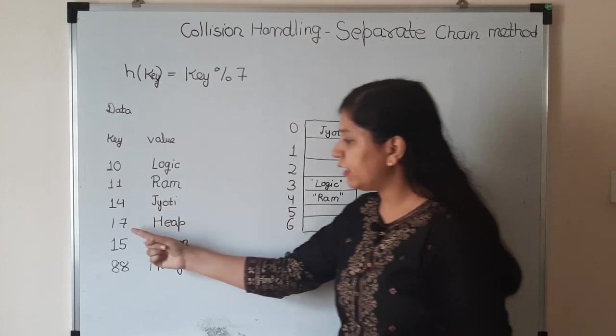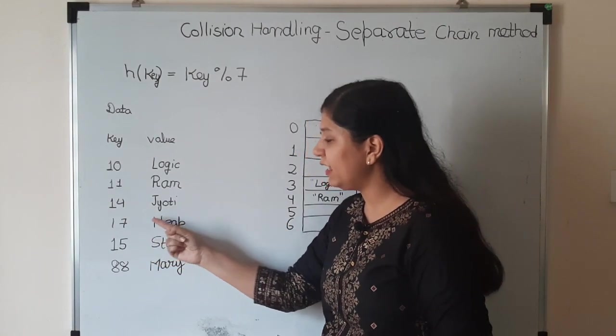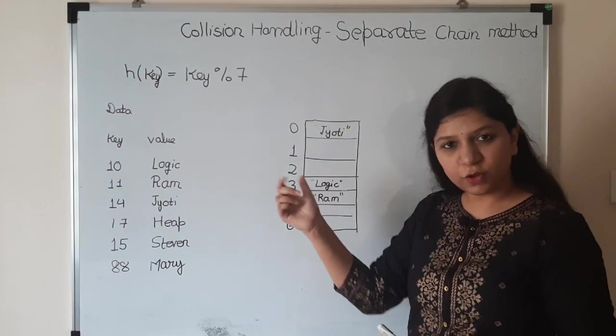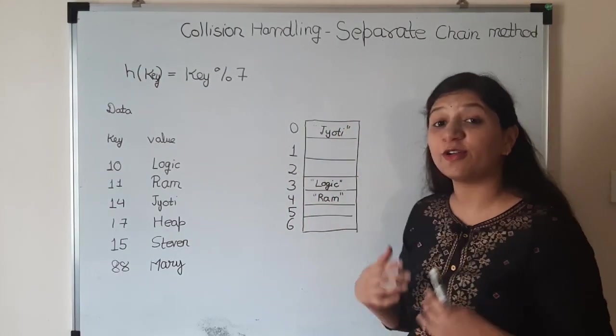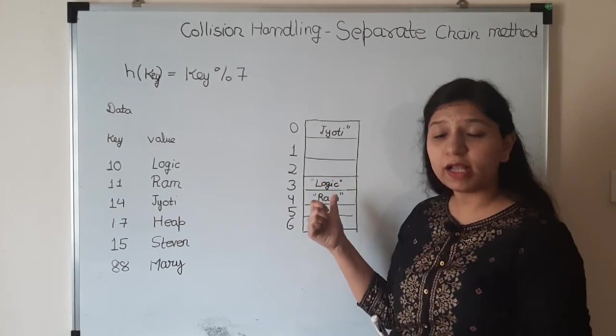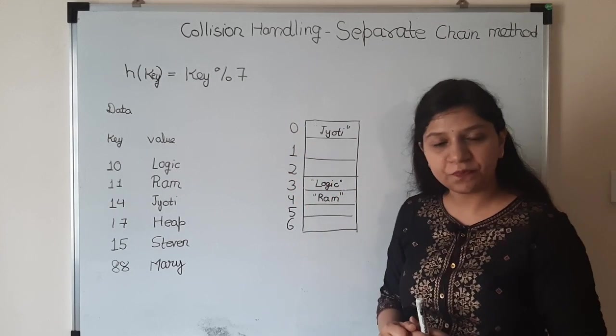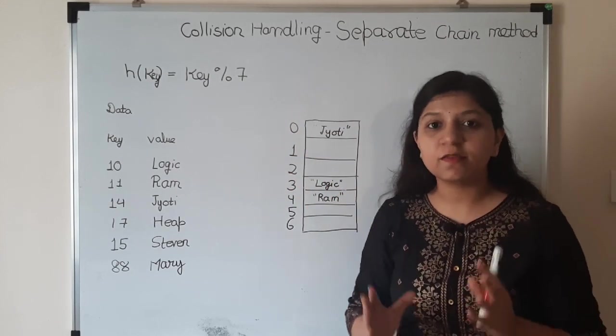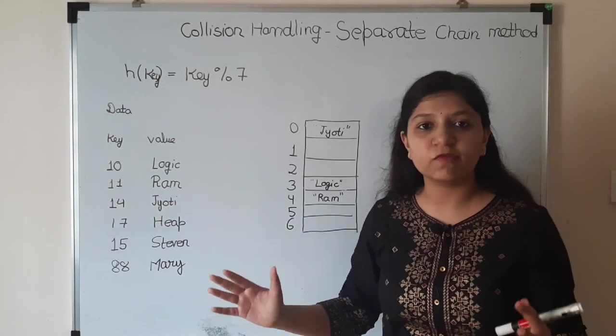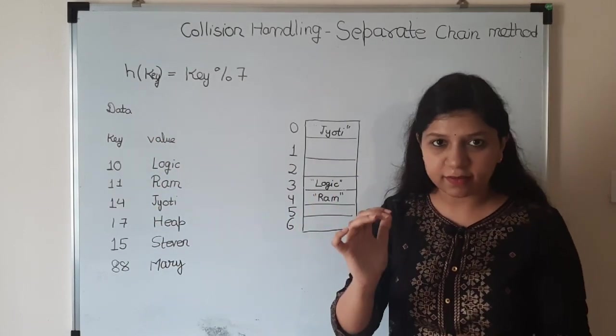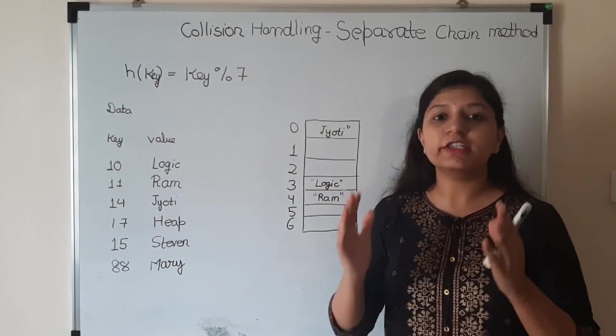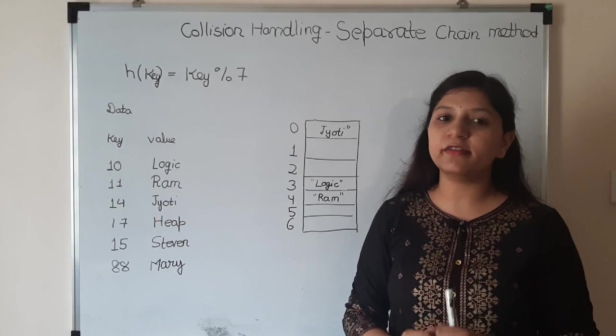Next is 17 Heap. 17 modulo 7 is 3. Here's the problem - this place is already occupied and now I want to keep Heap here as well because the hash value of both are same. This is bound to happen when you have arbitrary size values and limit them to fixed size values. We should use a method to handle these collisions.